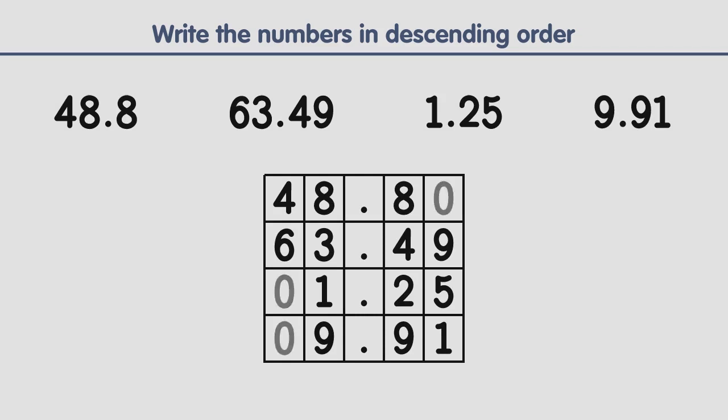The third step is to find the largest number. The largest number is the number with the largest digit in the first column. In the first column we have 4, 6, 0, and 0. The largest digit is 6, so this is the largest number.